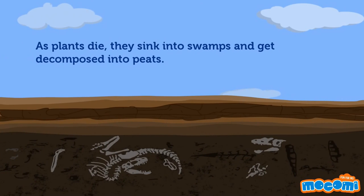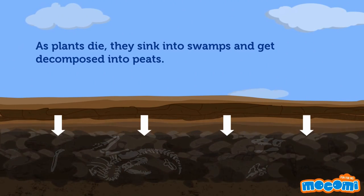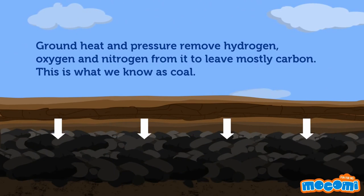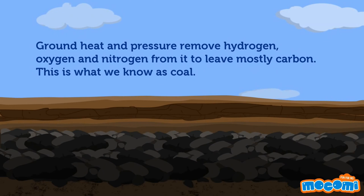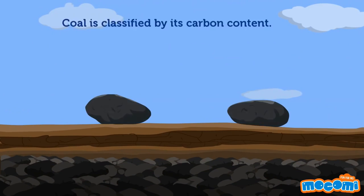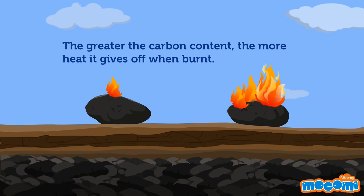As plants die, they sink into swamps and get decomposed into peat. Ground heat and pressure remove hydrogen, oxygen and nitrogen from it to leave mostly carbon — this is what we know as coal. Coal is classified by its carbon content; the greater the carbon content, the more heat it gives off when burnt.